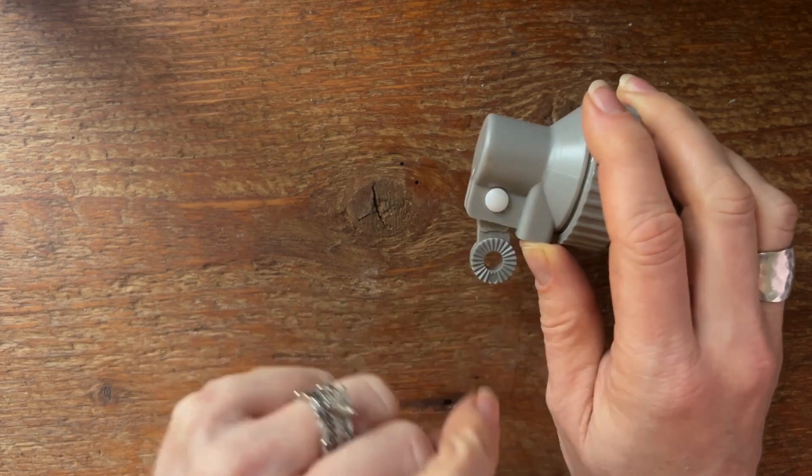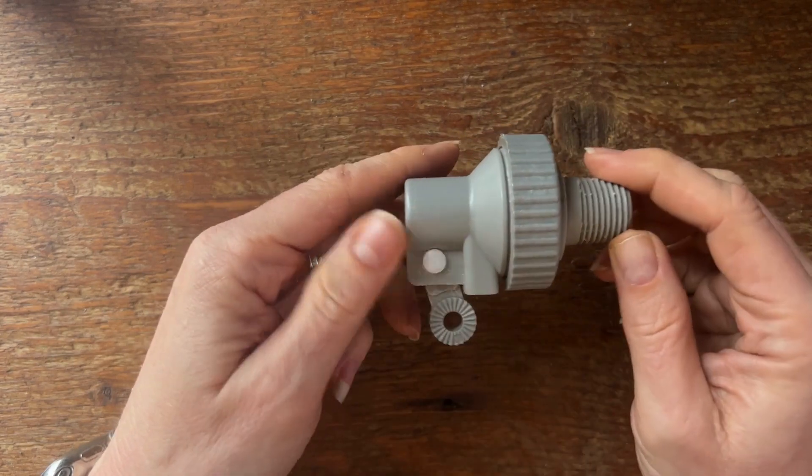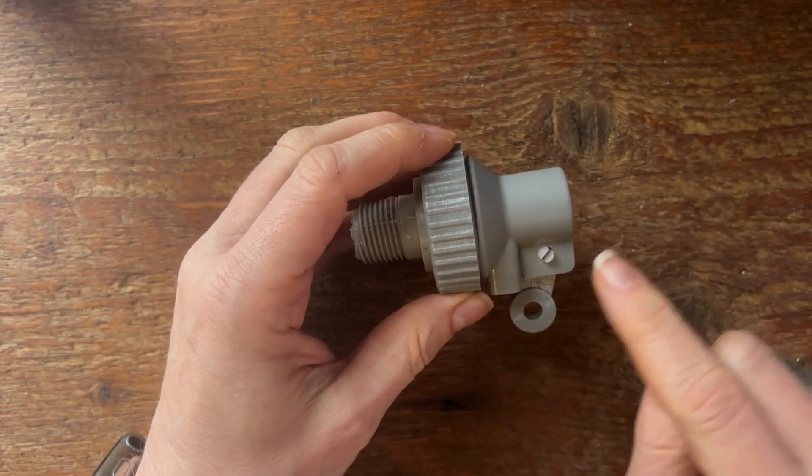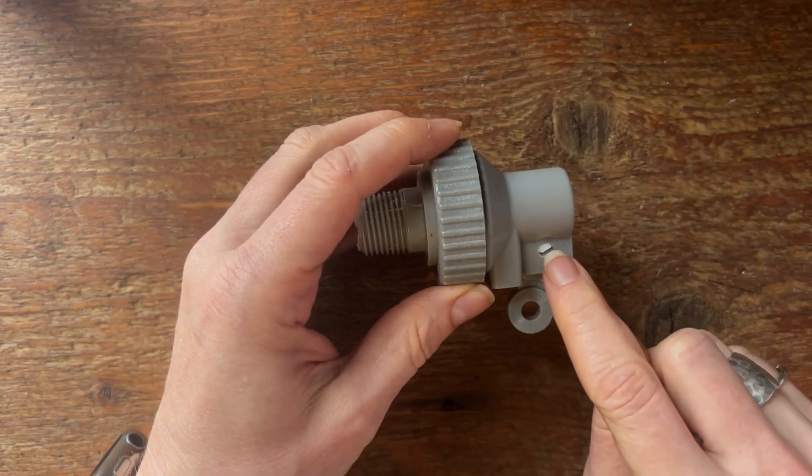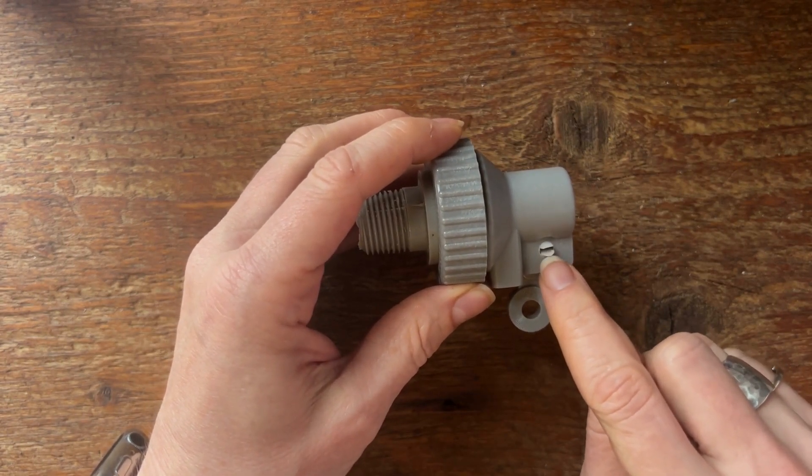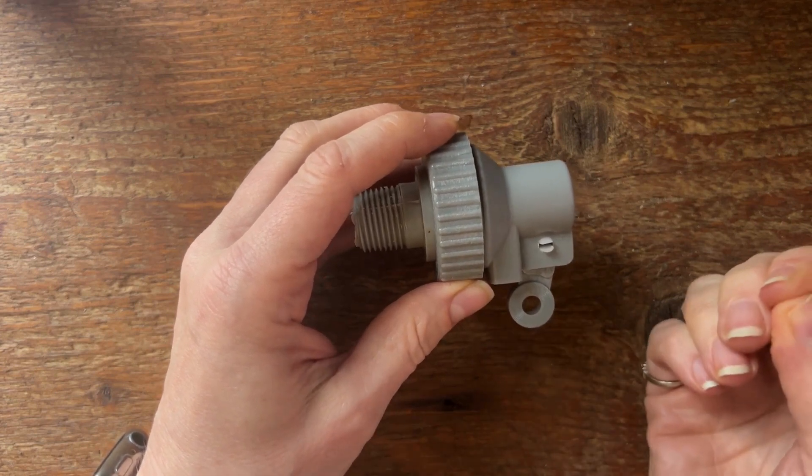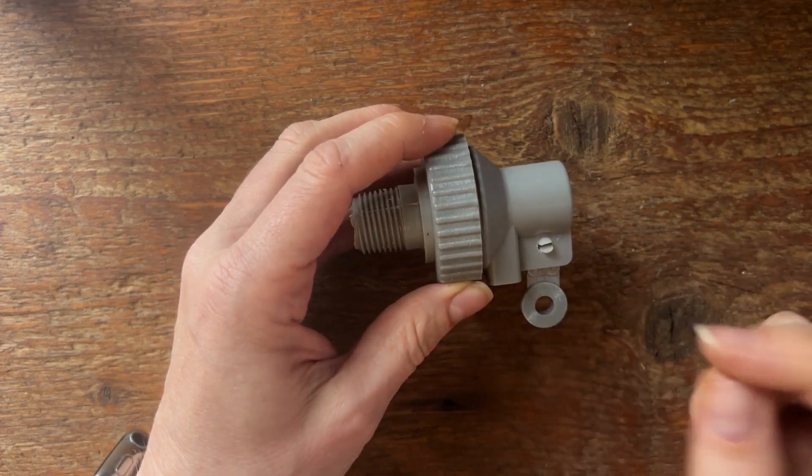If you turn it to one side you will see that one of the sides of this lock pin is slotted. This makes it really easy to remove if you ever need to.